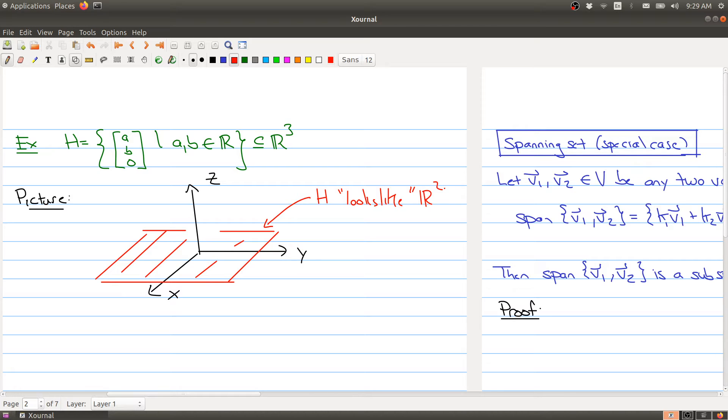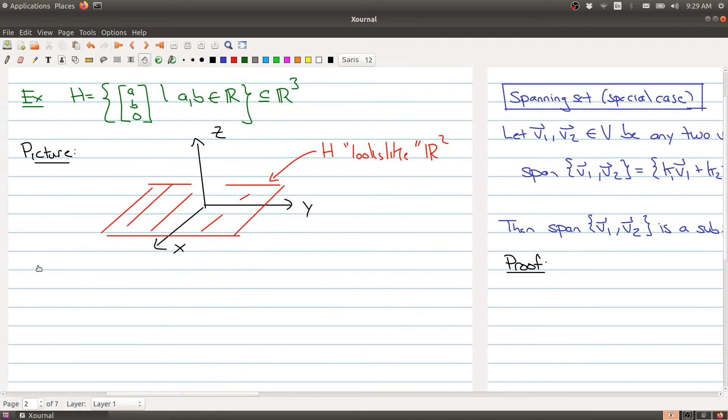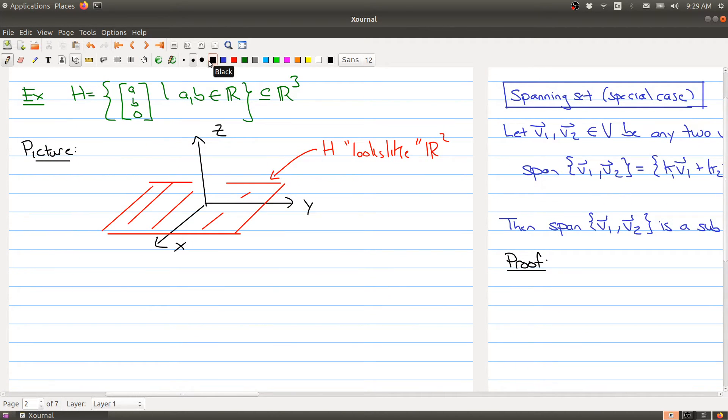Later on, we're going to be a little bit more precise about what looks like means. There's a notion of isomorphism here. But the point is R3 may not have R2 as a subspace, but it does have something that behaves like R2 inside of R3. And so let me actually prove that this is in fact a subspace.